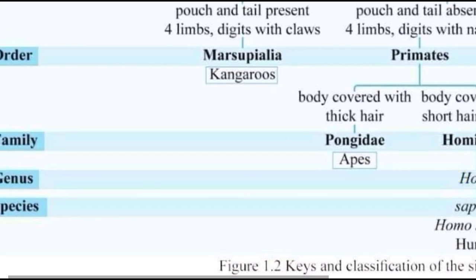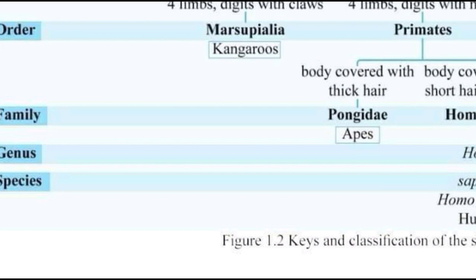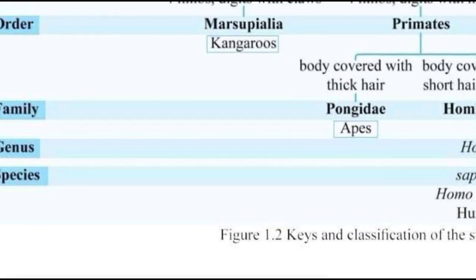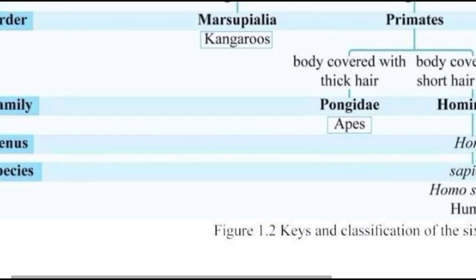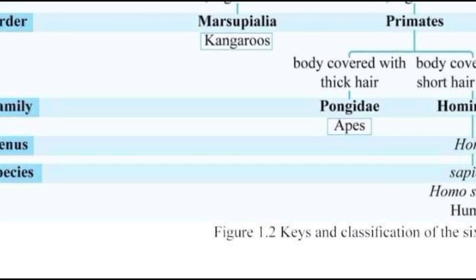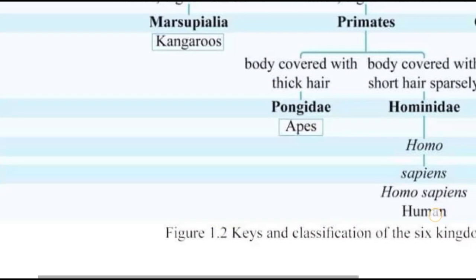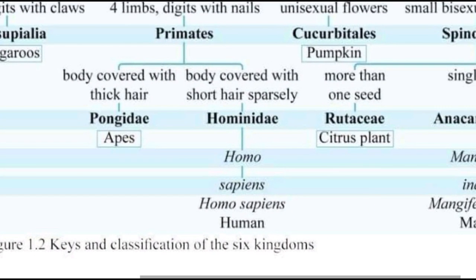This is a family of hominids. For the genus species — genus is Homo, species is sapiens. Homos are the same as the species of sapiens — Homo sapiens. This is the genus species of sapiens.